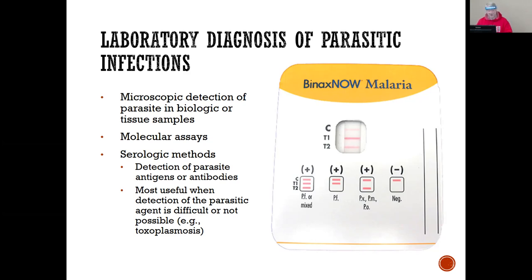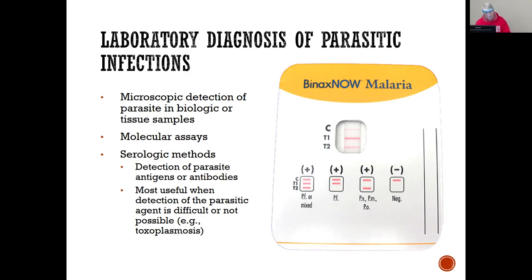We can also do molecular assays looking for the parasite itself. And serological methods — this is where we look for antigens or antibodies. It's most useful when detecting a parasitic agent that's difficult or not possible by other means. We want to see if the body has responded, so we can look for antibodies or search for antigen determinants based on the samples.